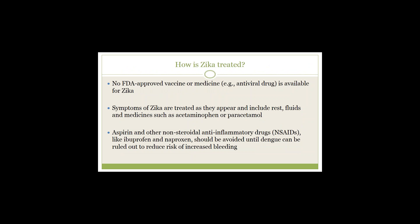How is Zika treated? There is no specific treatment or vaccine for Zika. Symptoms are treated by getting rest, drinking fluids to prevent dehydration, and taking medicines such as acetaminophen or paracetamol to relieve fever and pain. Aspirin and other non-steroidal anti-inflammatory drugs like ibuprofen and naproxen should be avoided until dengue can be ruled out, to reduce the risk of increased bleeding.